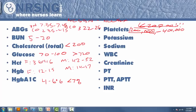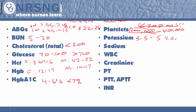For potassium, you're going to get a question about it on NCLEX — I can basically guarantee that. Potassium is 3.5 to 5. The result of both low potassium and high potassium is ventricular arrhythmias, and you're definitely going to get a question about this. For sodium, the range is 135 to 145.